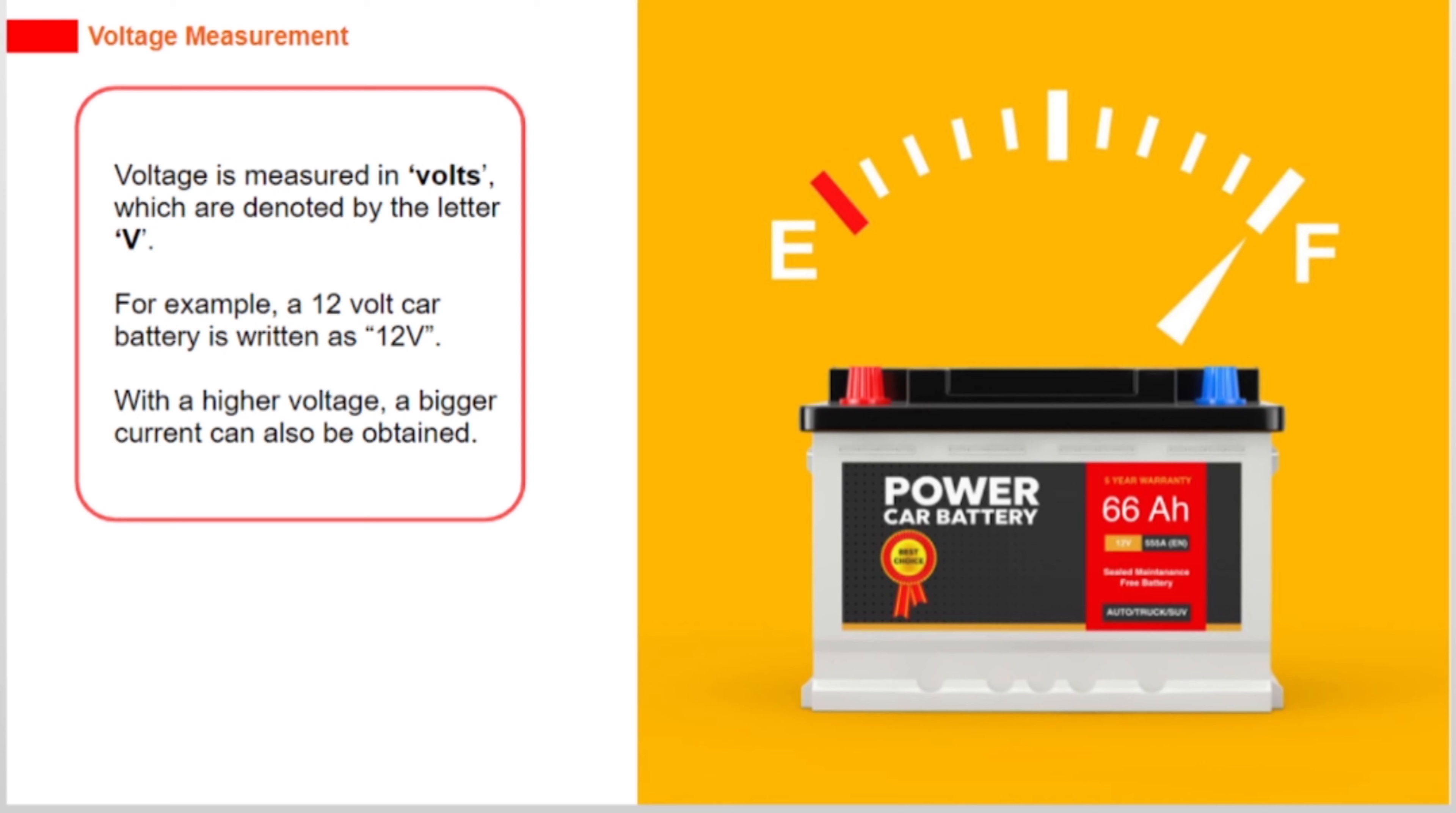Resistance is the opposition to the flow of electric current. It varies depending on the material and its shape. In the waterfall analogy, resistance is like rocks, trees, or other obstacles slowing down the flow of water.